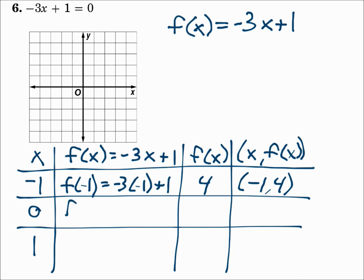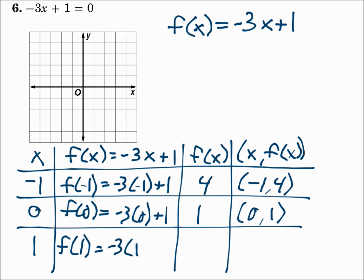When x is 0, f of 0 is negative 3 times 0 plus 1. Negative 3 times 0 is 0, plus 1 is 1. So 0 comma 1 is the next point. When x is 1, f of 1 is negative 3 times 1 plus 1. Negative 3 times 1 is negative 3, and negative 3 plus 1 is negative 2. So the point is 1 comma negative 2. You now have three points — plot them on the graph: negative 1 comma 4, 0 comma 1, and 1 comma negative 2. Connect the dots. The solution is the x-intercept, which is between 0 and 1.